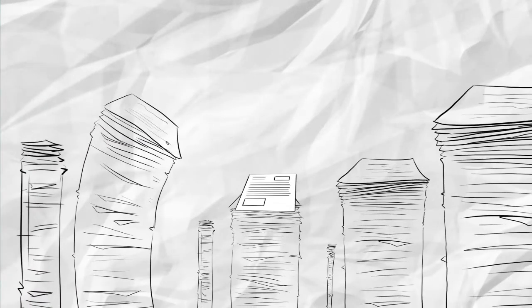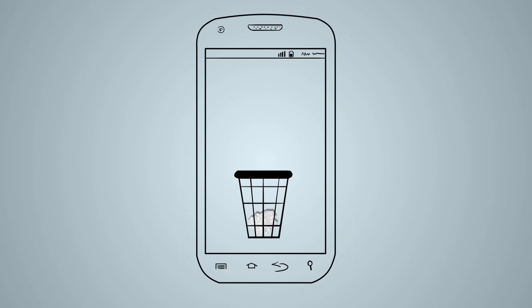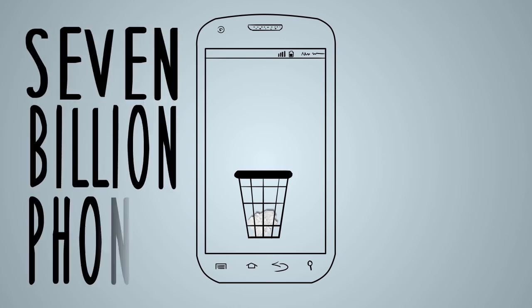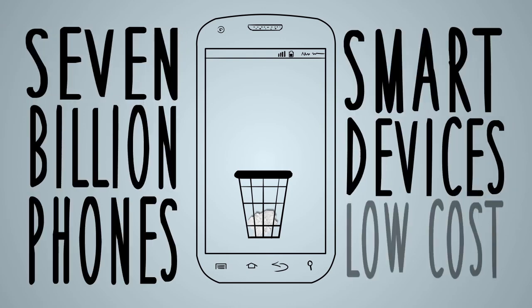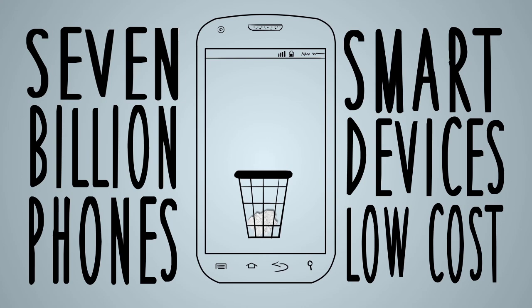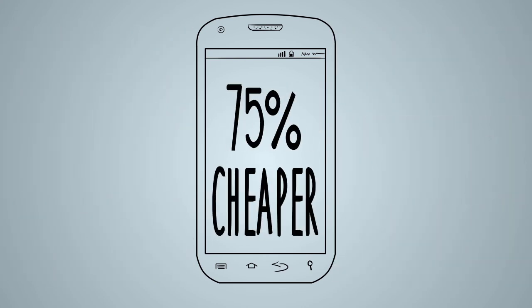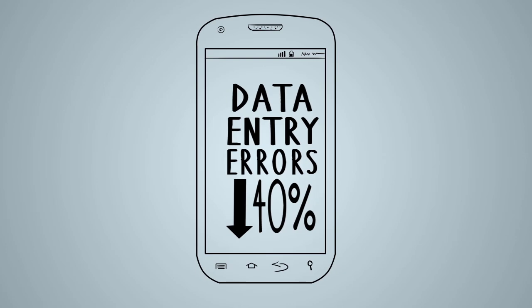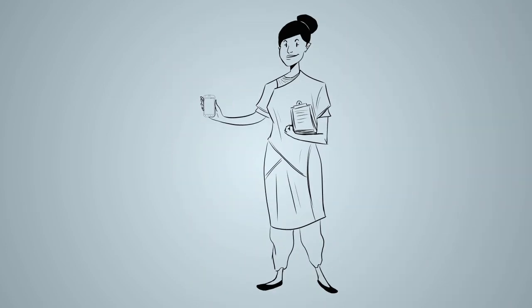Development practitioners should focus on impact, not information collection. One solution is already in hand for most of the world, with 7 billion phones and new smart devices at increasingly lower costs. Mobile approaches to data collection are cheaper, more accurate, more than twice as fast, and people like it.